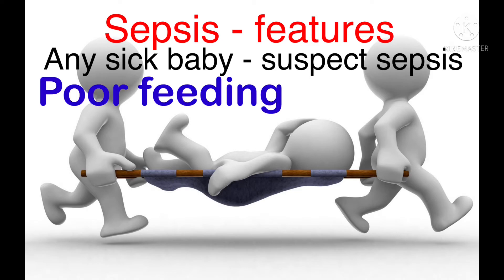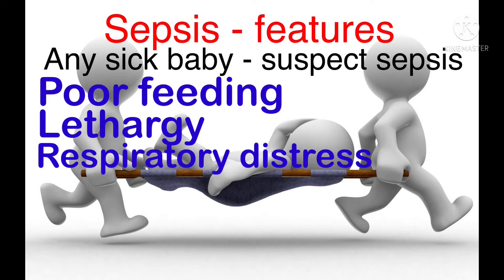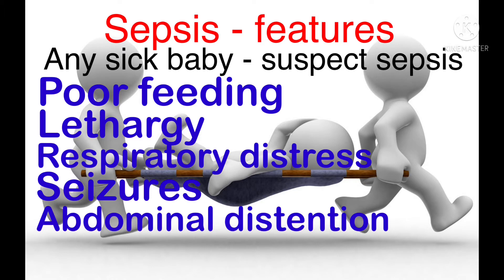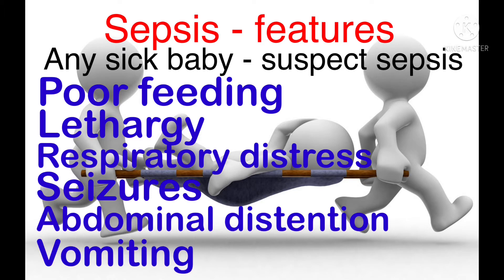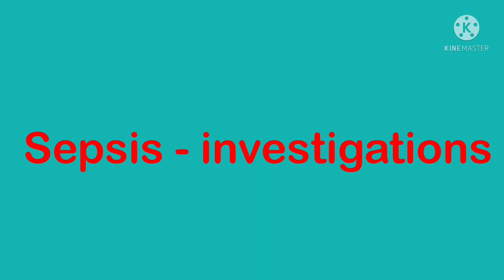The features of sepsis: any sick baby — suspect sepsis. Common features include poor feeding, lethargy, respiratory distress, seizures, abdominal distension, and vomiting. Sclerema is seen in severe sepsis cases — this is generalized thickening of the skin.